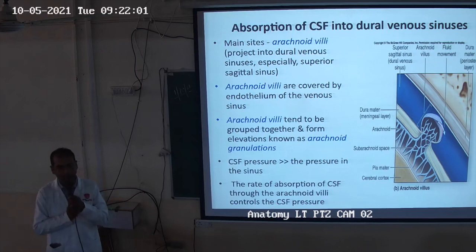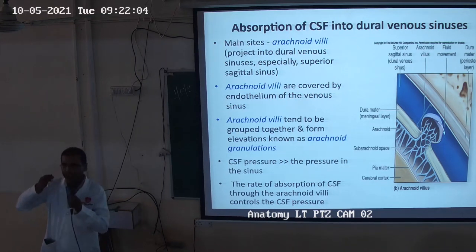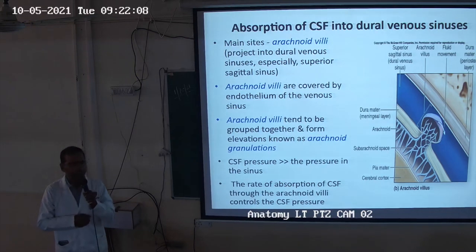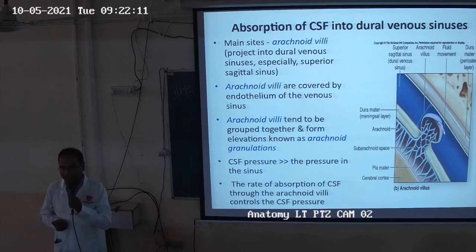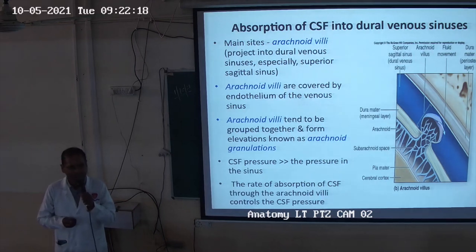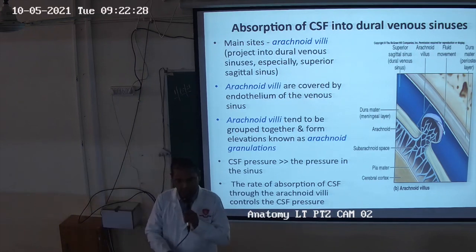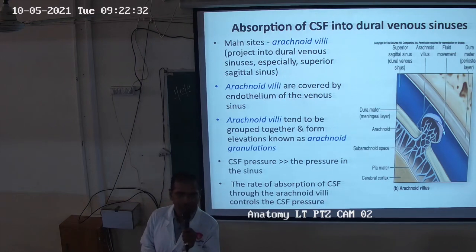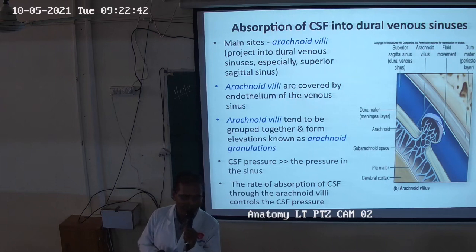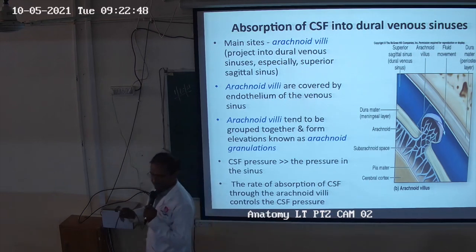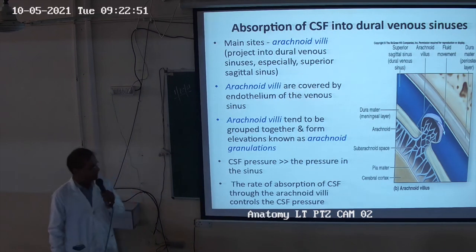The paired dural venous sinuses include the superior sagittal sinus, inferior sagittal sinus, superior petrosal sinus, inferior petrosal sinus, cavernous sinus, and straight sinus. An important exam question: the straight sinus is formed by the inferior sagittal sinus joining with the great vein of Galen — also called the great cerebral vein.